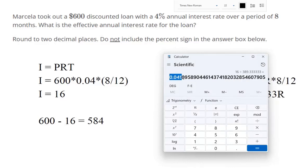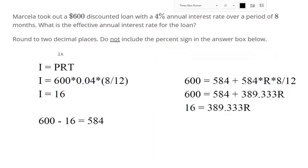And so, we've got 0.041, what do they say, round to two decimal places. So, that's 4.109 for a percent, or to two decimal places, that's 4.11 for an effective annual interest rate.